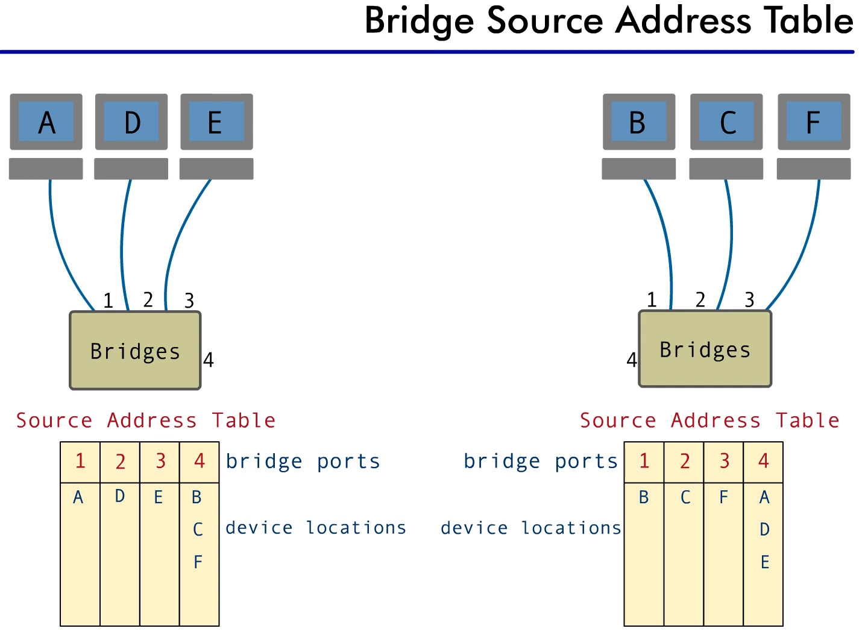Remember, a bridge learns where devices are located and then forwards packets based on this information. This whole process is possible because the bridge examines every packet that it sees and uses the information to update its SAT.